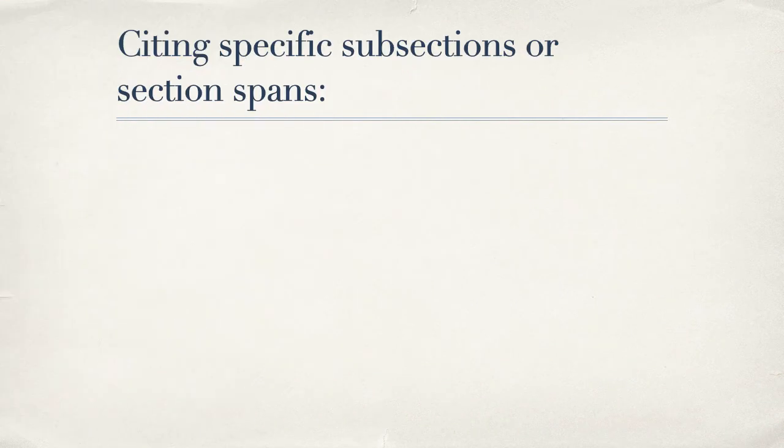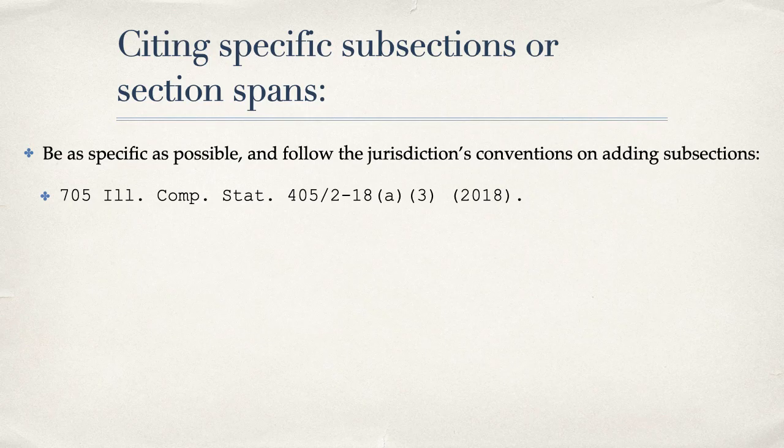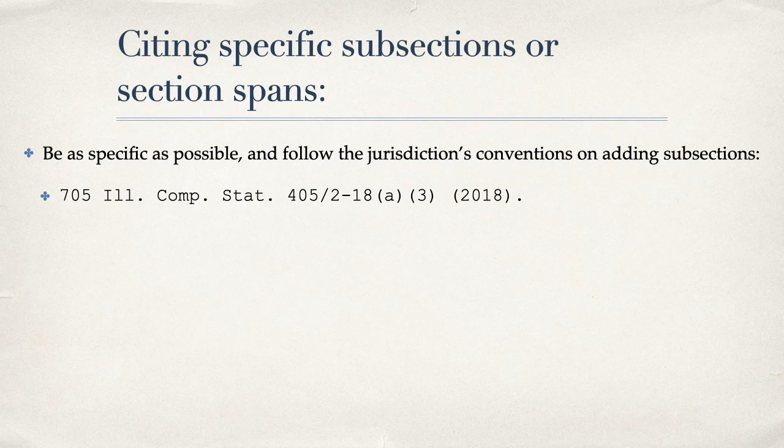Just as we provide pin-cites in our case citations, we want to be as precise as possible with our statute cites. Therefore, we may need to cite specific subsections or section spans. Be as specific as possible following the conventions of the jurisdiction for adding subsections. In Illinois, adding subsections is done the same way it is with the federal code, where subsections are added to the end of the section number. This cite would direct the reader to look at section 2-18, subsection A, sub-subsection 3.